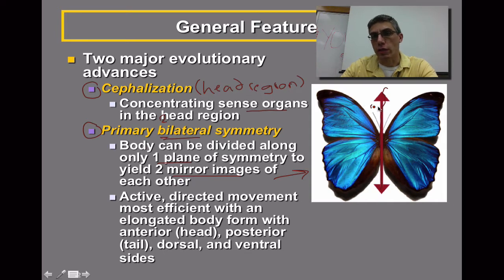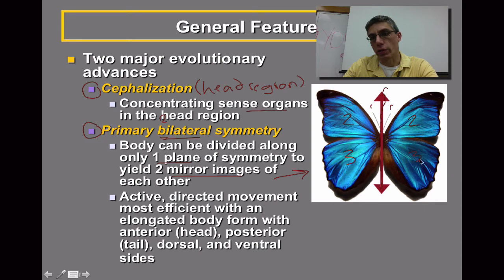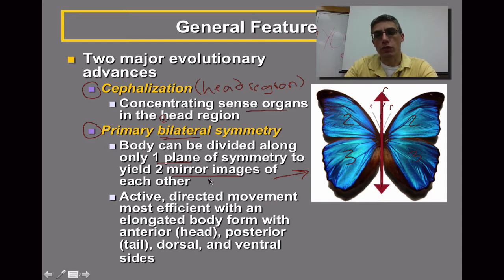The two halves are mirror images of each other. We have one antenna on this side and one on this side; one upper wing on this side and an upper wing on this side; a lower wing on this side and a lower wing on that side. So again, they are the same parts, but they are considered mirror images of each other.